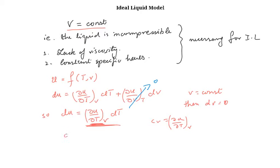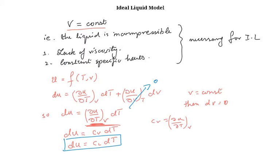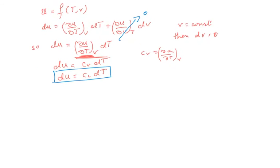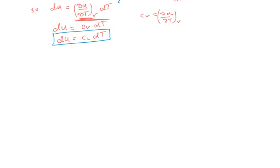So we can write it as dU is equal to CV into dT, or in the case of ideal liquid we write it as dU is equal to CL into dT, where CL is the specific heat of the liquid. This is an important relation which we are going to use again.